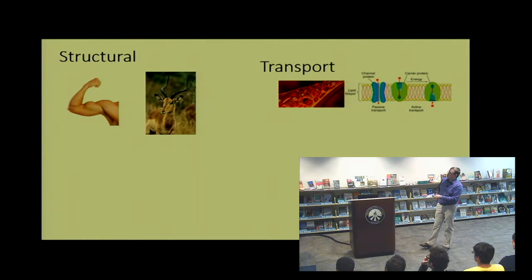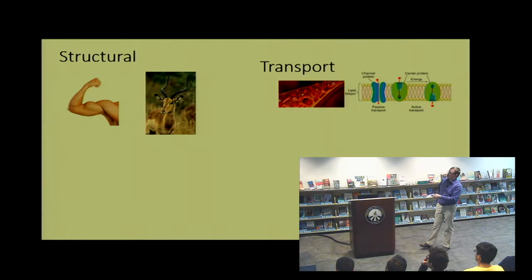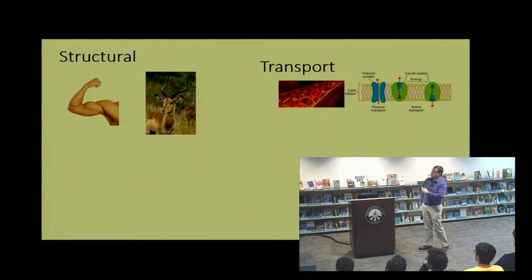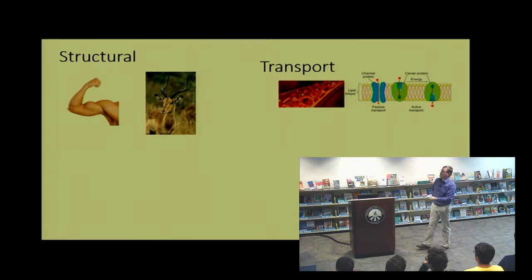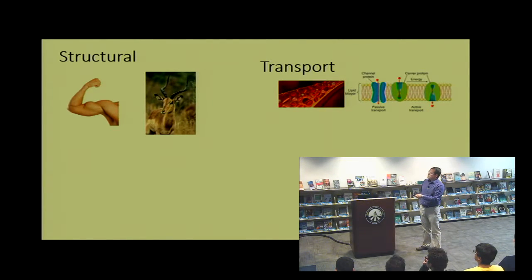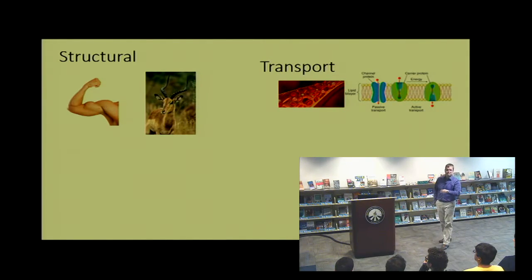At a more molecular level, shown here is a cell membrane with two different types of proteins. Protein channels allow ions to move freely between the extracellular and intracellular space. Carrier proteins use energy to actively pump ions or other small molecules across the cell membrane.